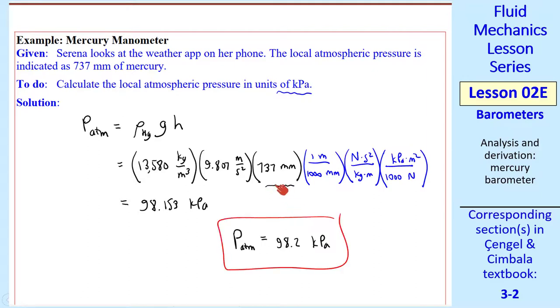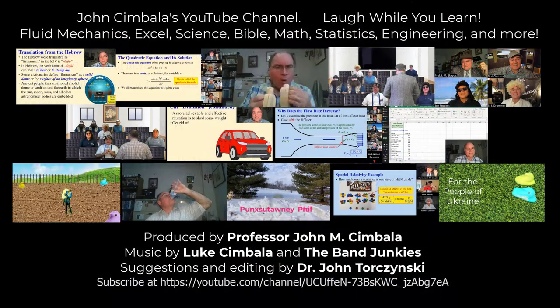Just a comment about why mercury is used. Notice that for a common atmospheric pressure like 98.2 kPa, the column height for mercury is about three-fourths of a meter. If you used a liquid with a much smaller density, this column height would have to be very large, and that becomes somewhat impractical. Thank you for watching this video. Please subscribe to my YouTube channel for more videos.